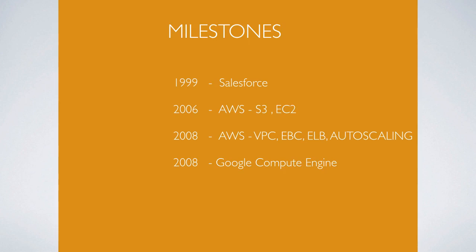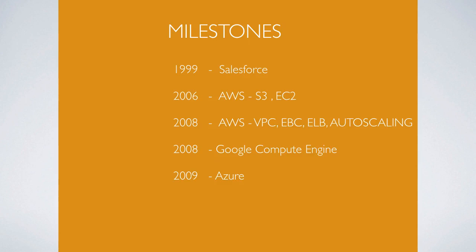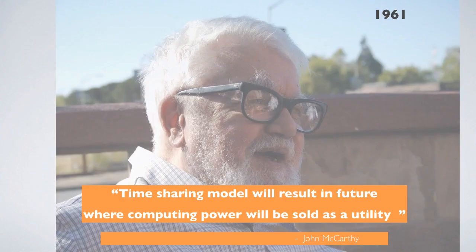Around 2008, Google Compute Engine launched their own public cloud service, which was followed in 2009 by the launch of Microsoft Azure. Today, as professor John McCarthy mentioned, we are using this cloud computing model as utility computing — with shared utilization of computing resources on demand.